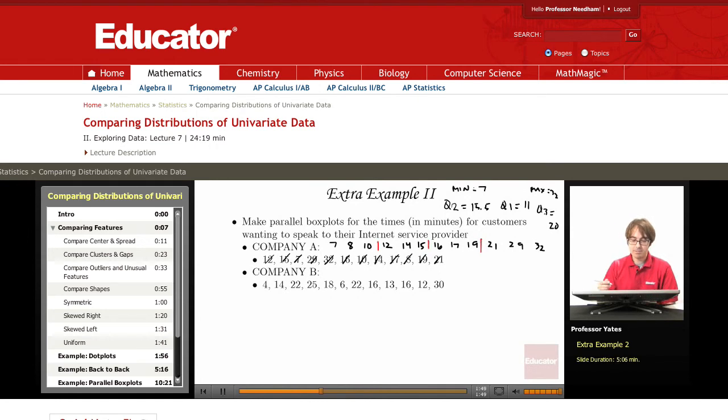Okay, so now let's do the same thing for company B. We have 4 for our smallest value. We have a 6 here. Next we have 12, 13, 16, 16, 18, 22, 22, 25, and 30.